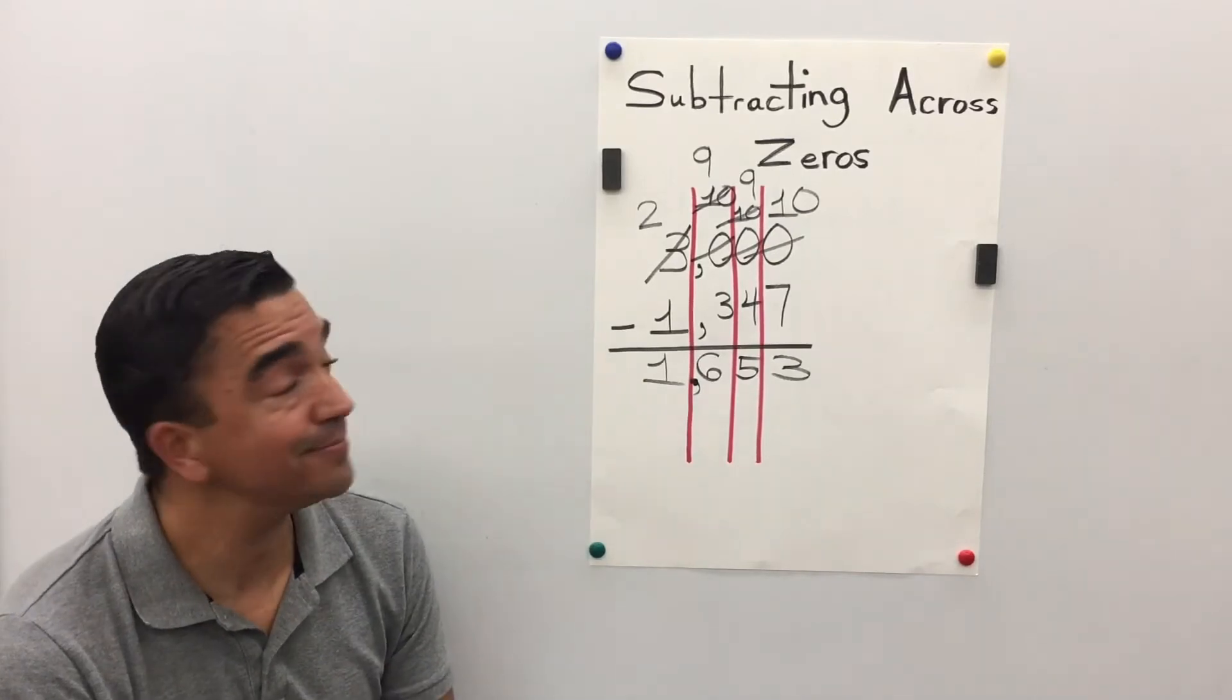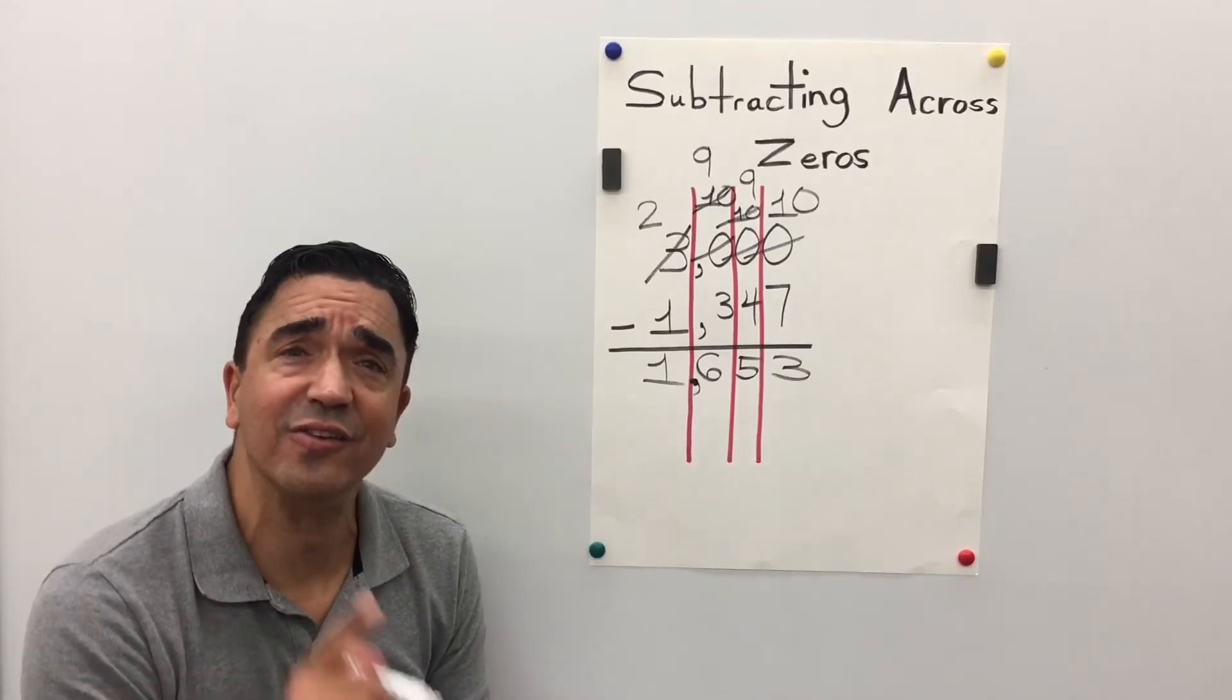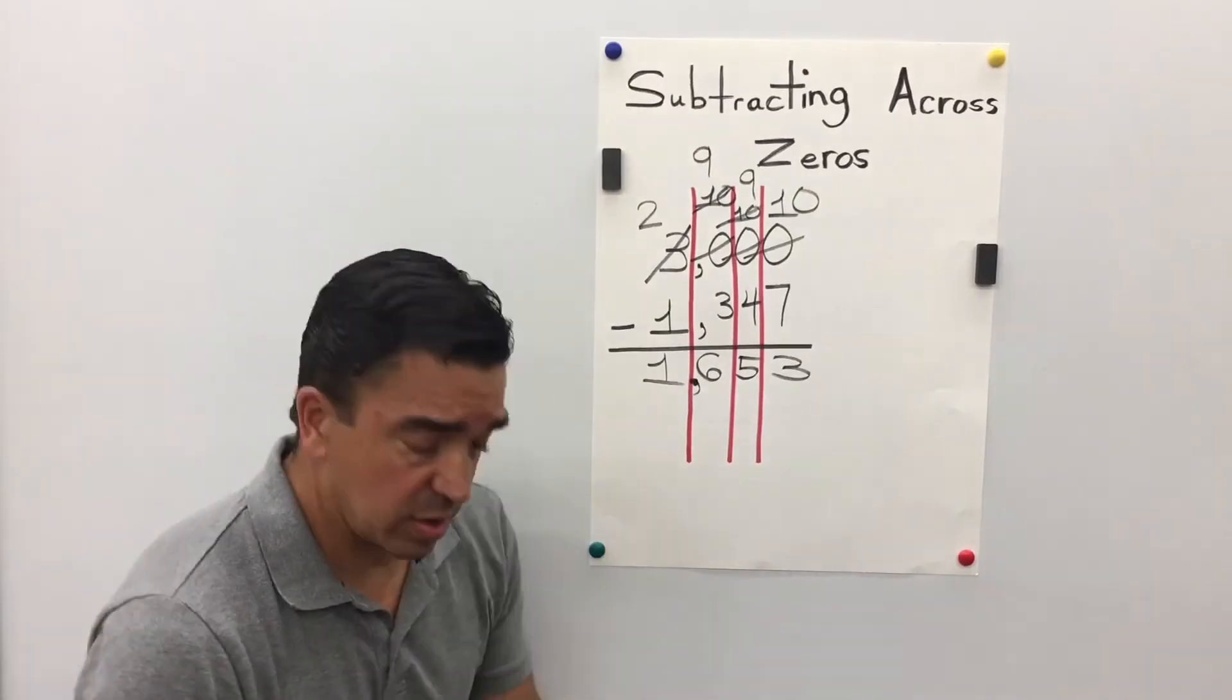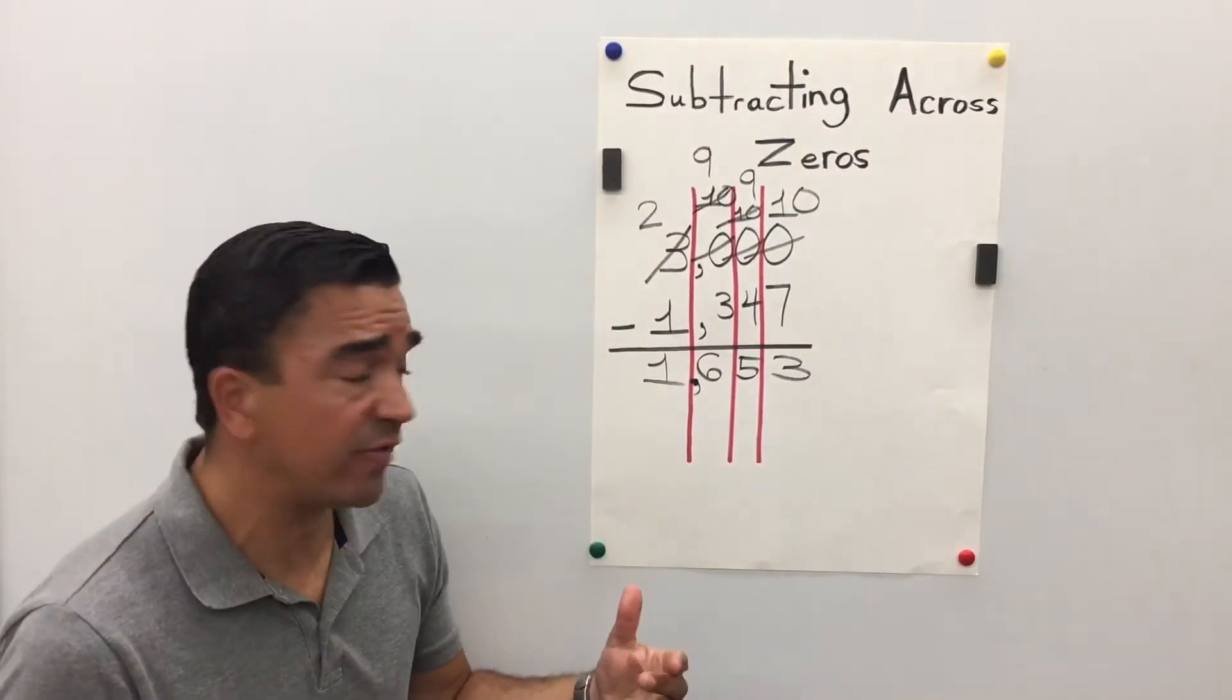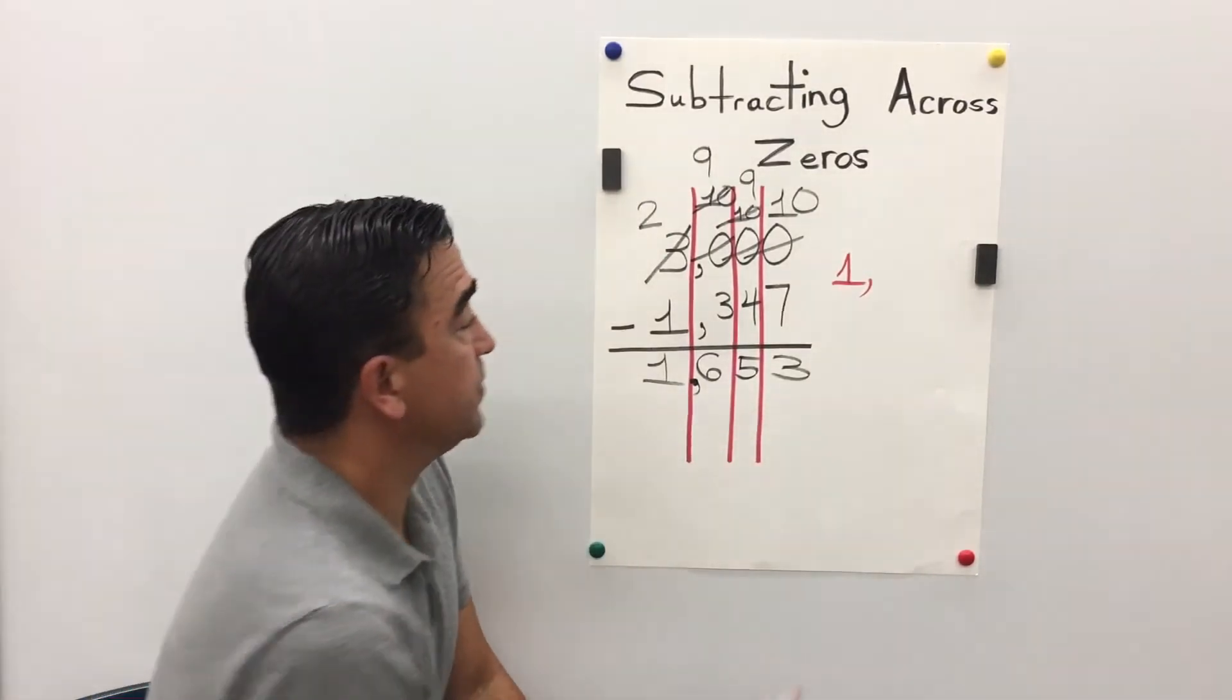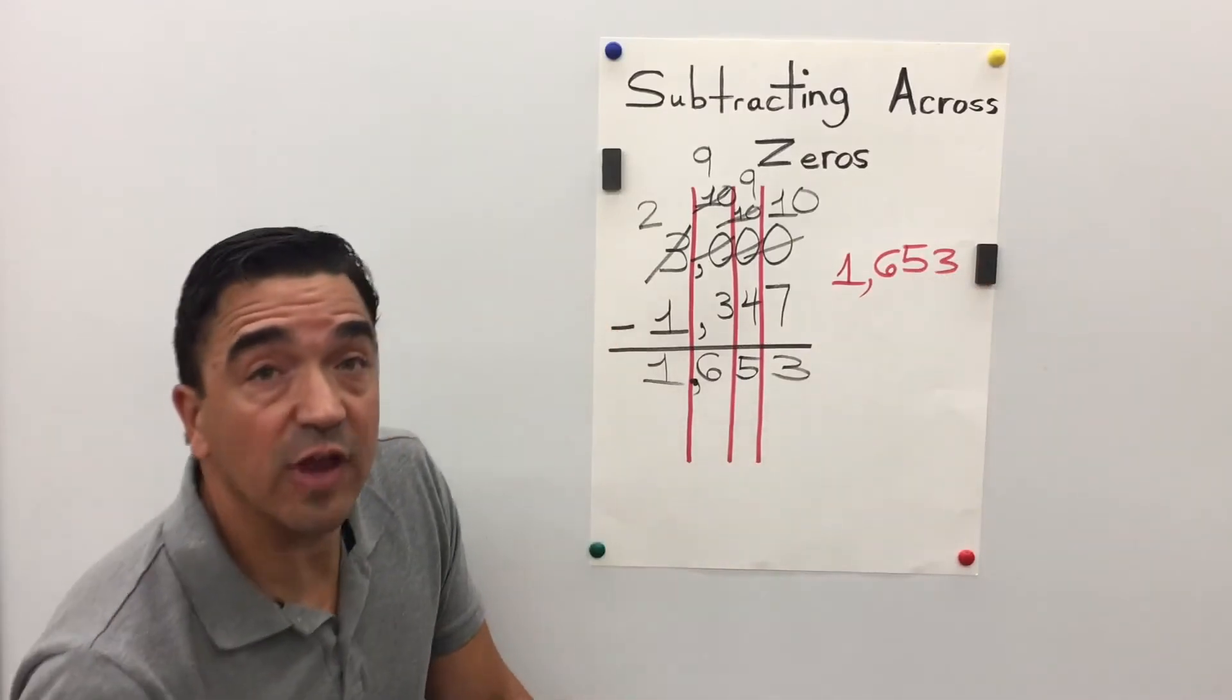But you know what? I'm not done. A good mathematician always checks his or her work. So, I'm gonna take the answer. 1,653.